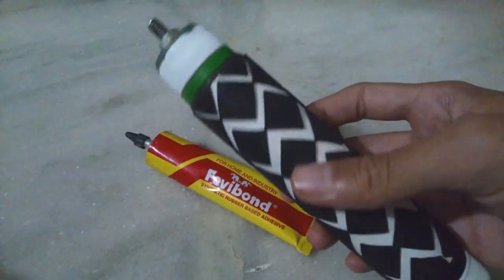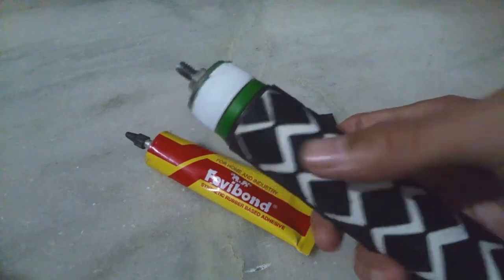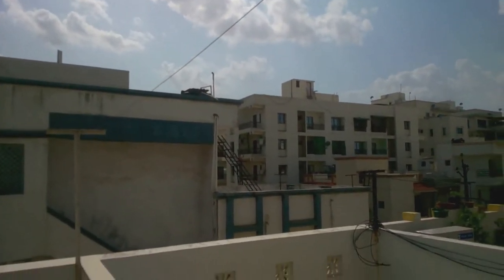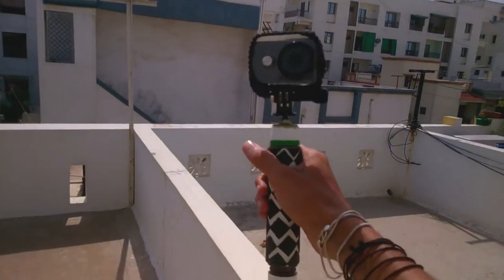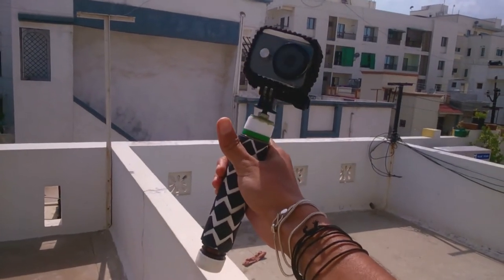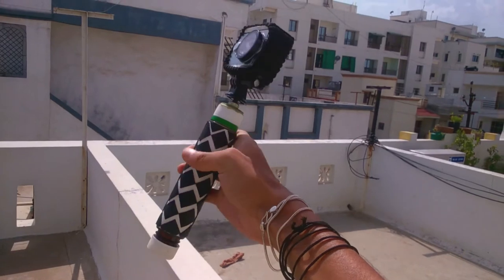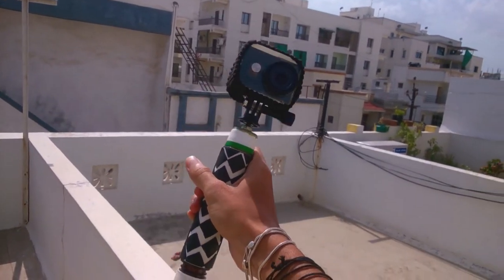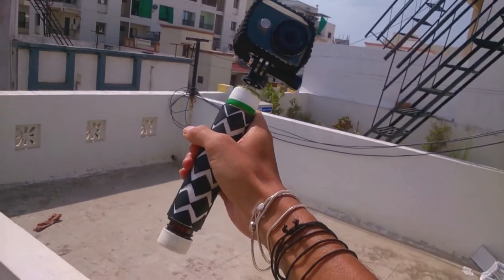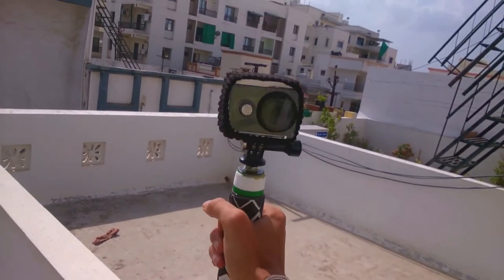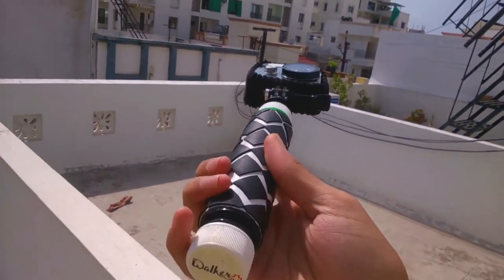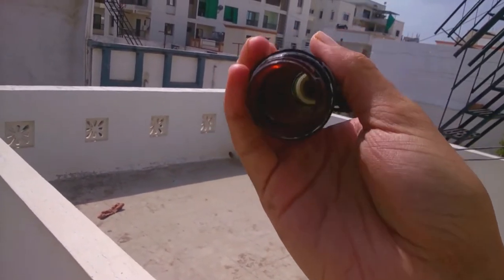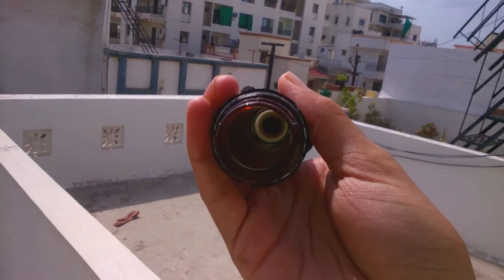I am at the terrace of my house and this is pretty much how the grip looks. This serves three purposes: one as a regular grip. If you open this bottom cap, it can store some items inside of it.